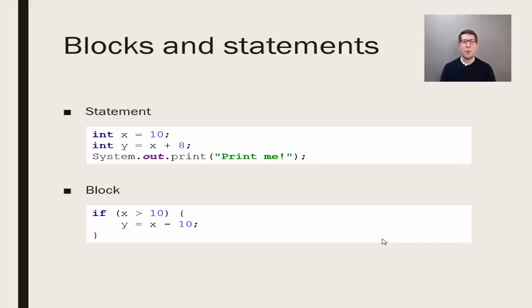Here are some basic rules for writing code to keep in mind. There are two major components of code. These are blocks and statements. A statement is a single executable instruction. A block can contain multiple statements.